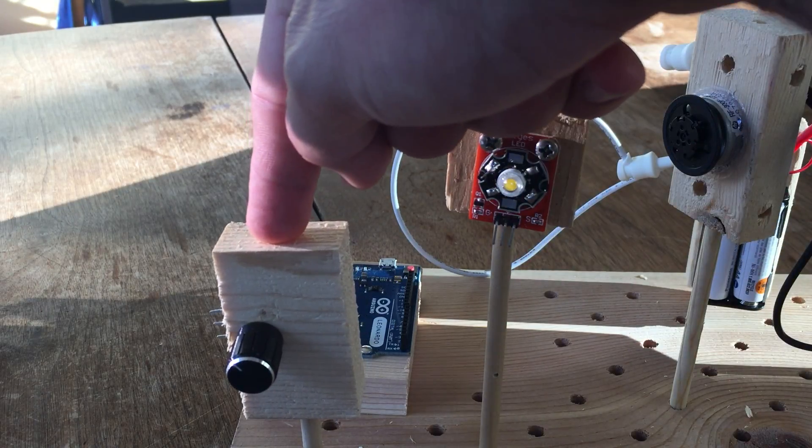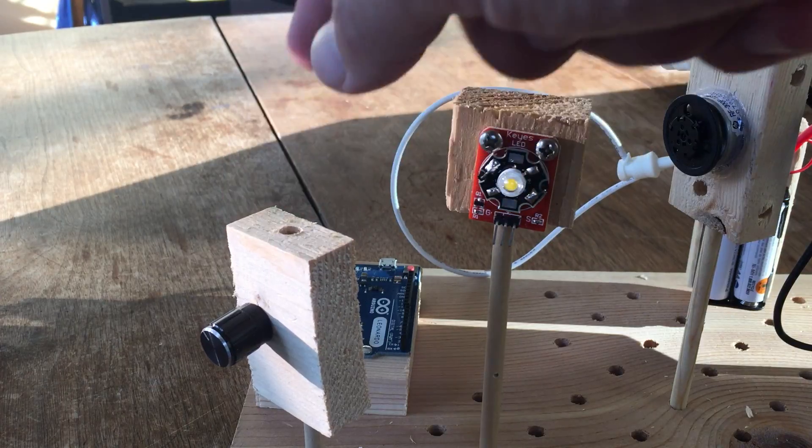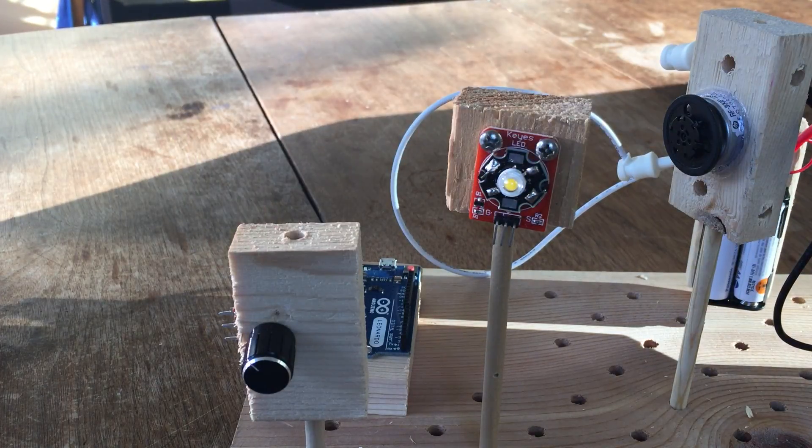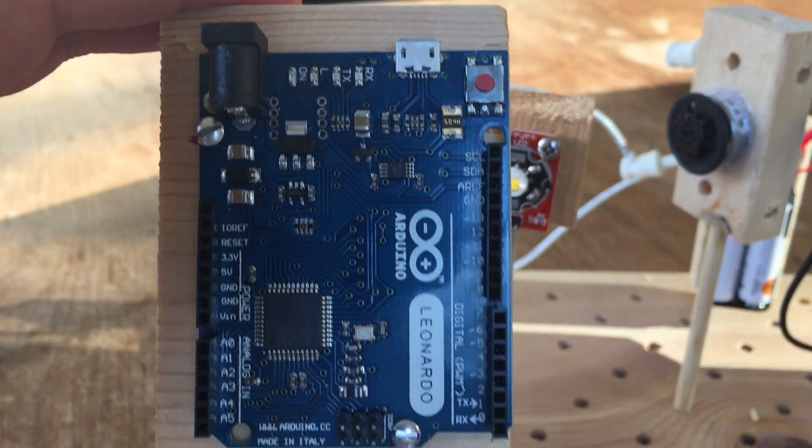Also, take a potentiometer block and mount it just in front of that in the corner. Next, you'll need an Arduino Leonardo or Uno.